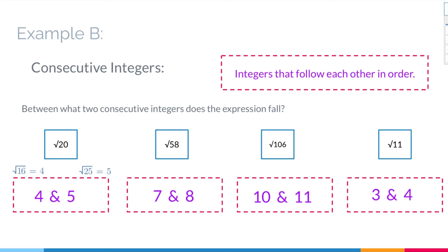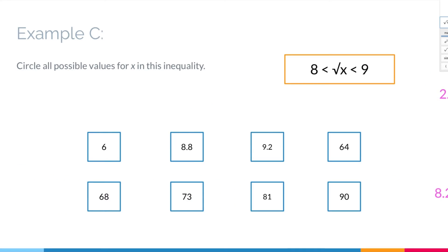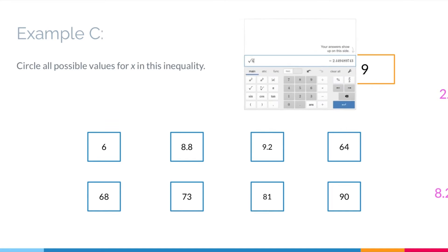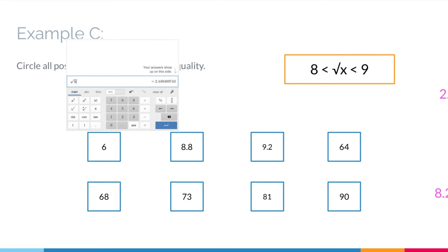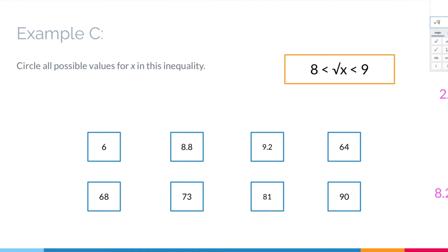Now Example C says: circle all possible values for x in the inequality 8 < √x < 9. We're looking for numbers that, when square rooted, will be between 8 and 9. The first choice is 6 — I'll use the Desmos calculator. The square root of 6 is 2.44..., which is not between 8 and 9, so I put an X through that choice.